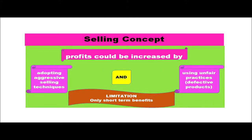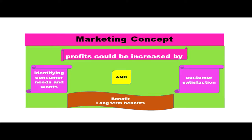The next philosophy is the selling concept. Here it is believed that profits could be increased by adopting aggressive selling techniques and sometimes using unfair practices — even defective products are given to consumers. Producers sell whatever they have produced using aggressive selling techniques. However, the limitation is that only short-term benefits can be reaped, because once consumers realize the quality is poor or that they have been cheated, they stop buying and warn others not to buy either.